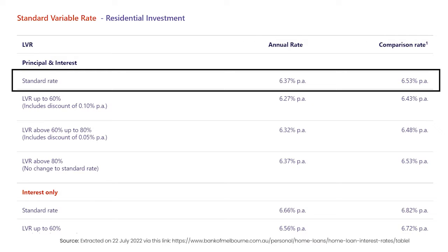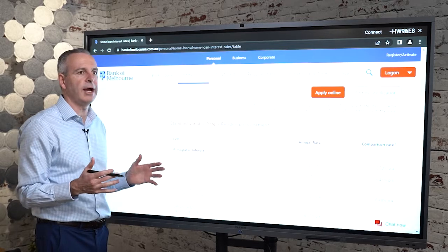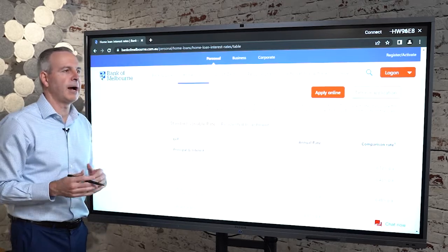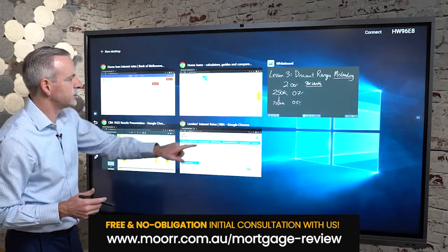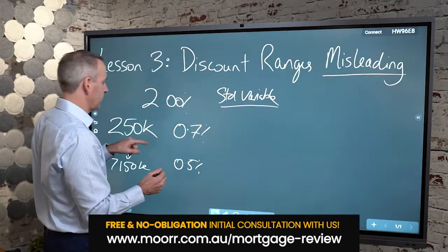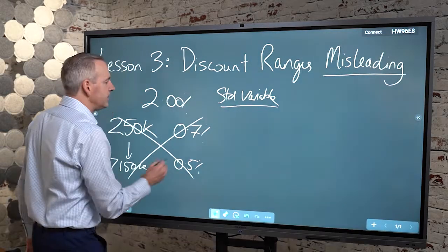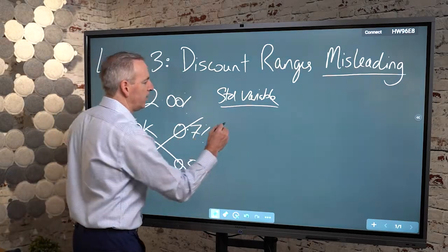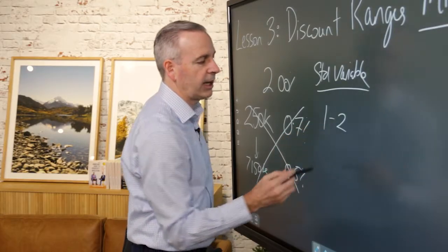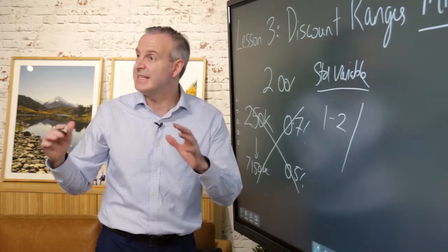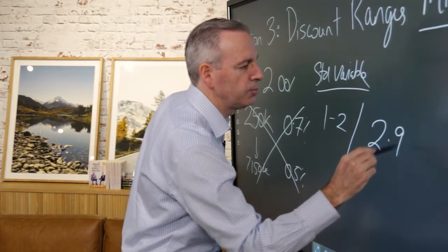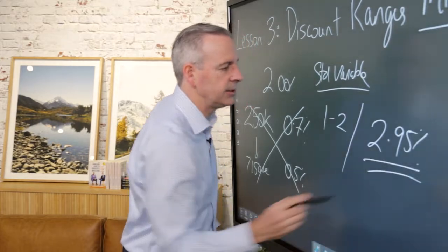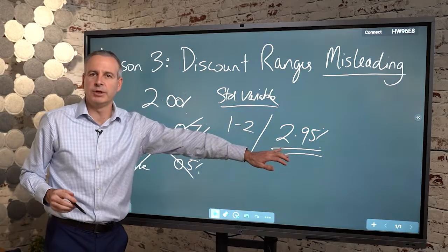Now, that standard variable rate at 6.37 is significantly higher than the CBA rate. So if people are at their barbecue and they're talking about, oh, I've got an X discount in terms of my discount, these days, that was the old days, now we're starting to see discounts very much in that 1% to 2% range. And if you're borrowing a significant amount of money, we've seen discounts as high as 2.95% off some lenders. But what does that really mean?